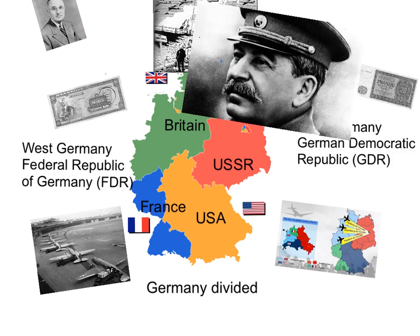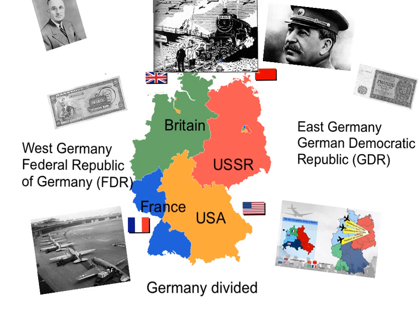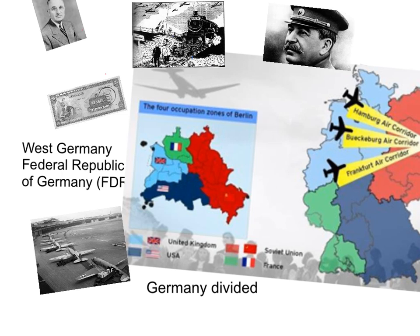Stalin, as leader of the USSR, had not been consulted and was not happy, as he believed this was a step towards creating a permanently divided Germany. He didn't want America to have any more influence in Germany, and he didn't want American troops to remain there. Stalin wanted to prove a divided Germany did not work, so in June 1948, Stalin set up a military blockade around West Berlin.